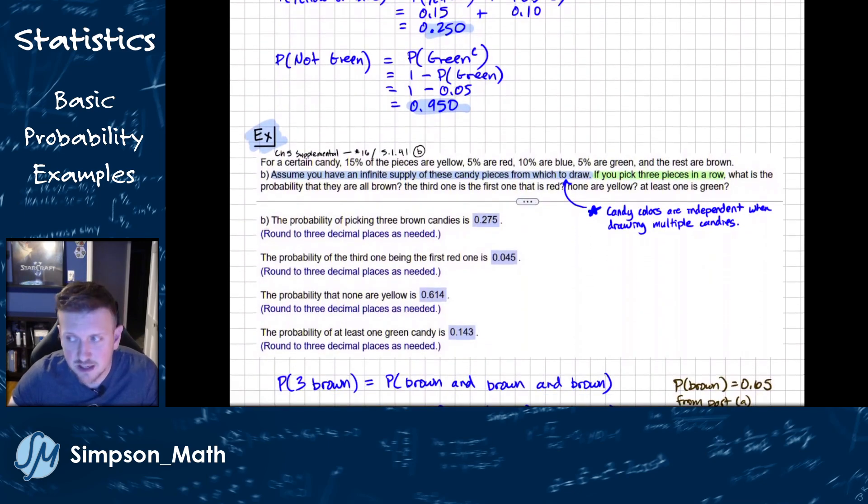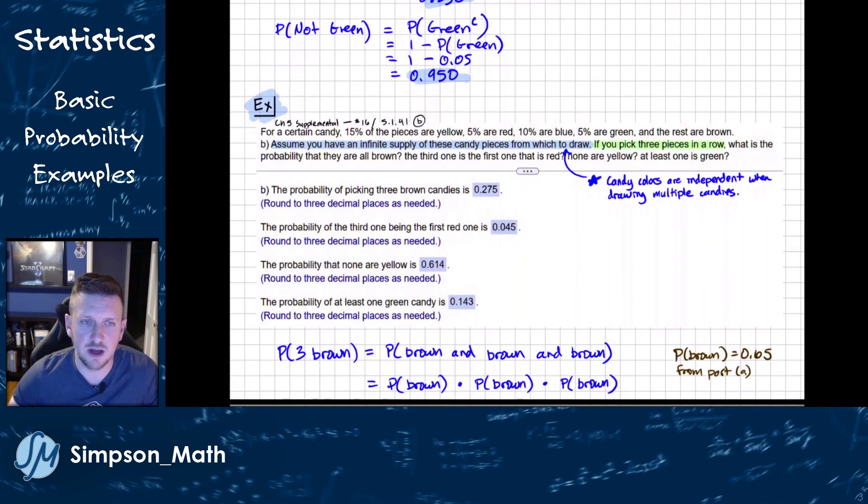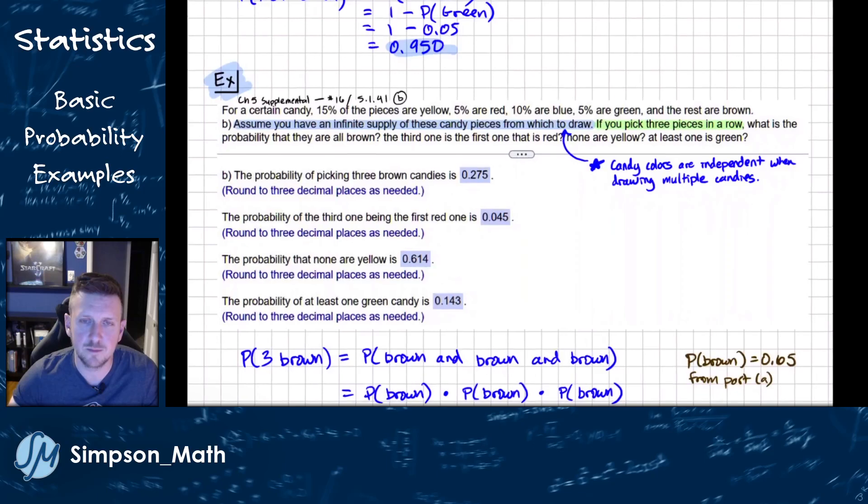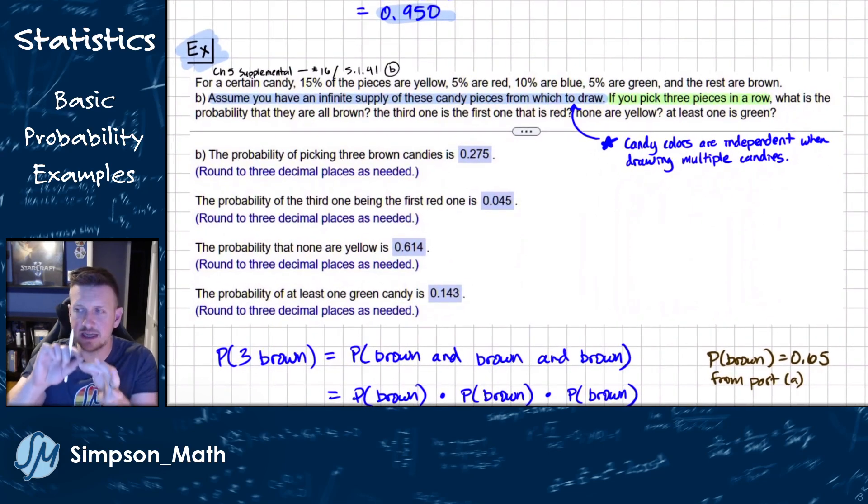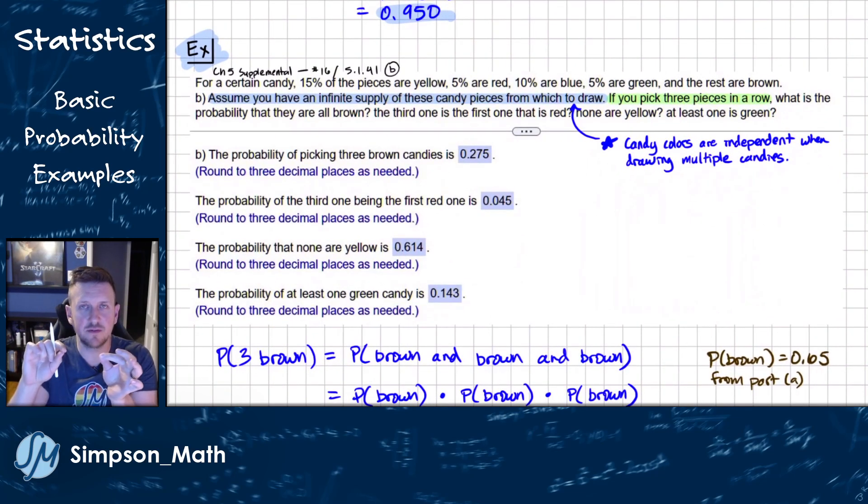So following that same setup, now we're talking about pulling multiple candies. We're going to pull three pieces in a row. And we have this little assumption that the problem nicely tells us. It's assumed that we have an infinite supply of these candy pieces from which to draw. So what that tells us is that candy colors are independent when drawing multiple candies. Why would this matter? Well, if this was a little fun size bag of candy with maybe 10 candies...